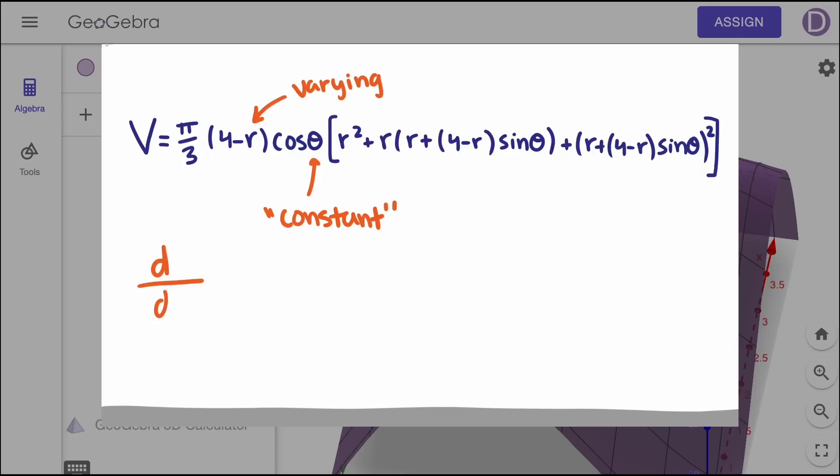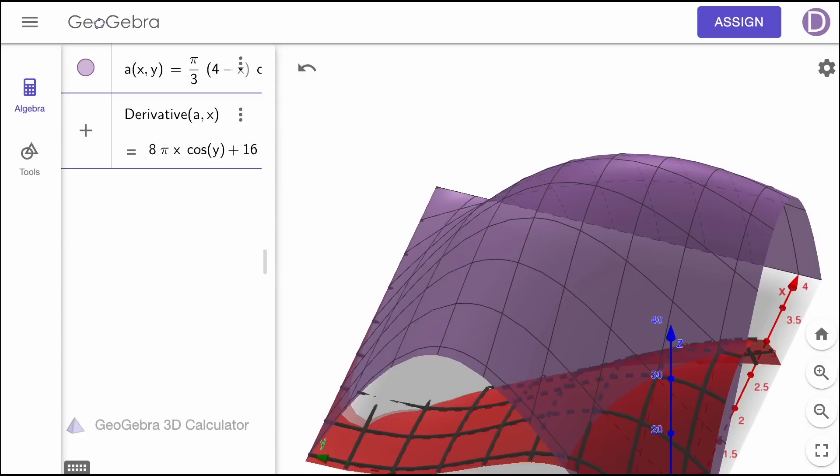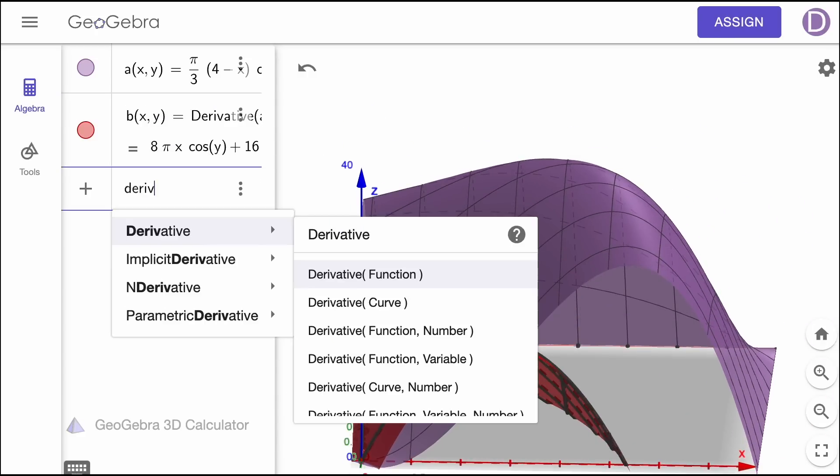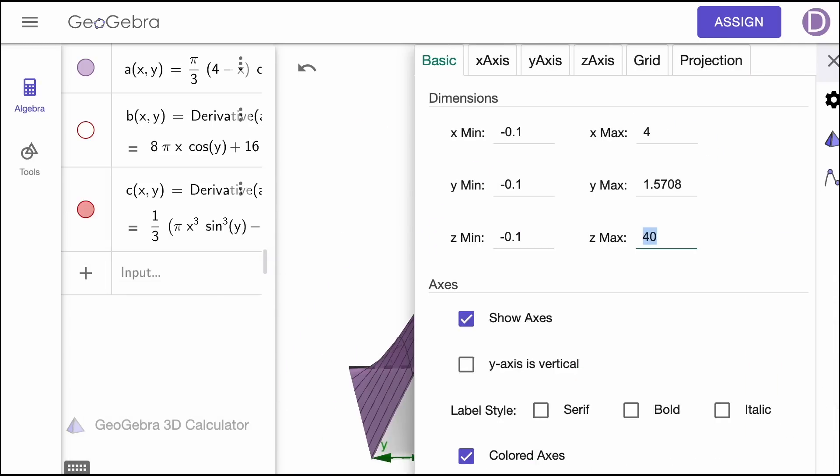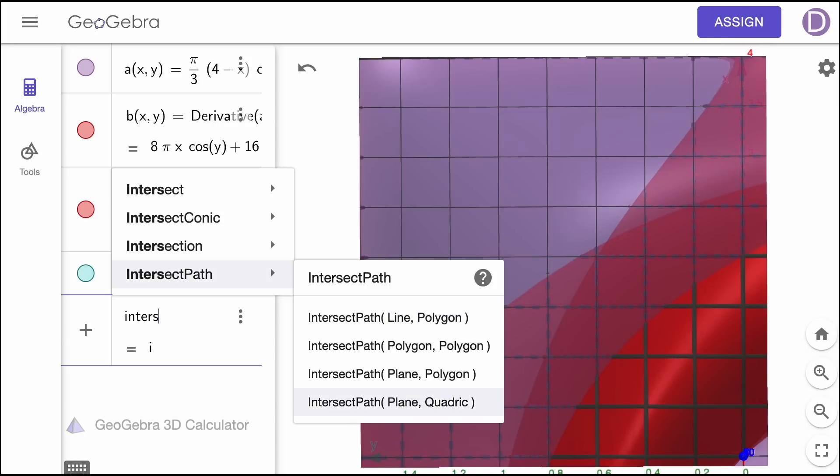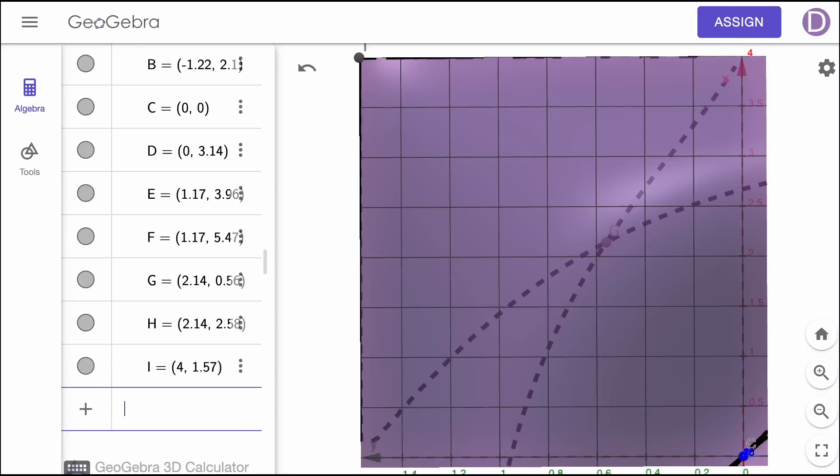Partial derivative assumes that only one variable is changing and that the other variables are constant. When the partial derivative with respect to the radius, which we've labeled x, is equal to zero, it will give us a curve along a ridgeline where we hit maximums. Similarly, when we take the partial derivative with respect to the angle, which we've labeled y, and set it equal to zero, we get another ridgeline where these two ridgelines cross, then that is where our maximum lies.